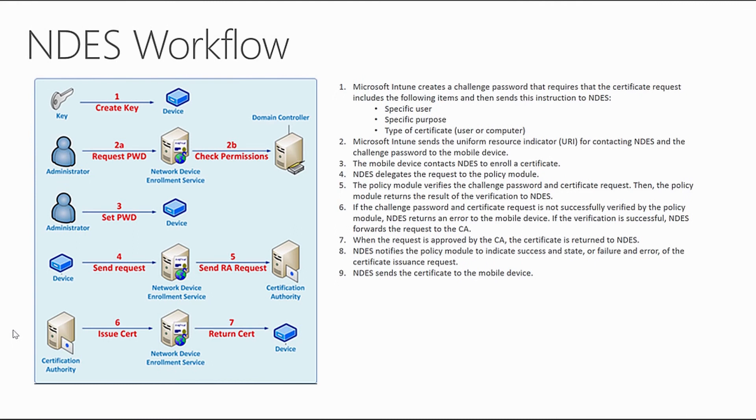What we show on this screen is an example of the workflow of a Network Device Enrollment Services request. A key is created for the device, the administrator requests a password and checks permissions — all automated on the back end. We then challenge that request and send it to an issuing certificate authority. The certificate is issued back to the NDES service so it recognizes the device as trusted, and then it's issued back to the device. Now this device is a known entity and we can manage it with that certificate for the longevity of that certificate.